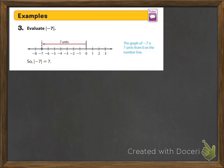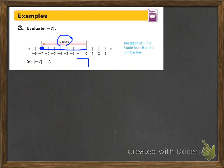Evaluate the absolute value of negative seven. What they're really asking is: how far away from zero is negative seven? It is seven units from zero, going from zero to negative seven. So the absolute value of negative seven is seven.